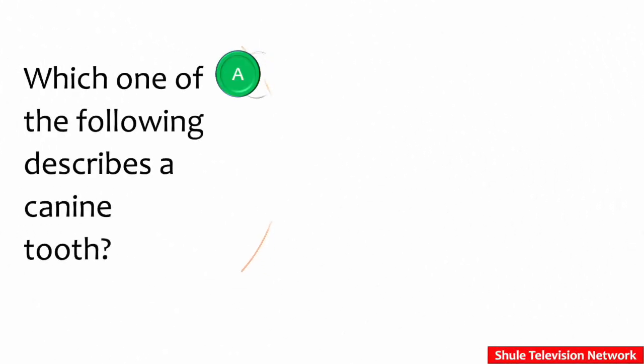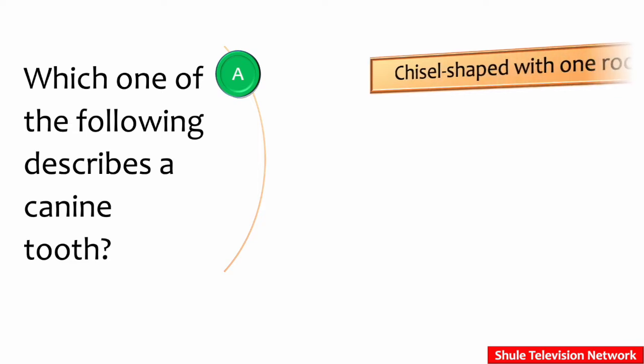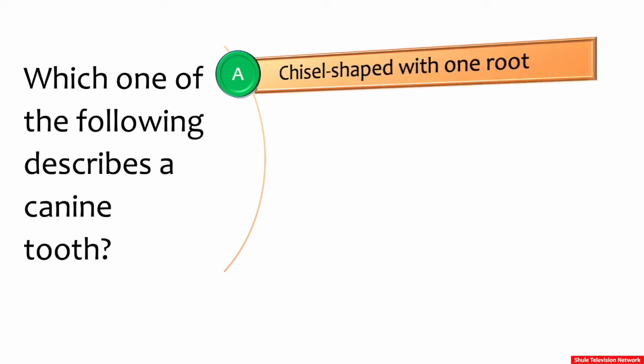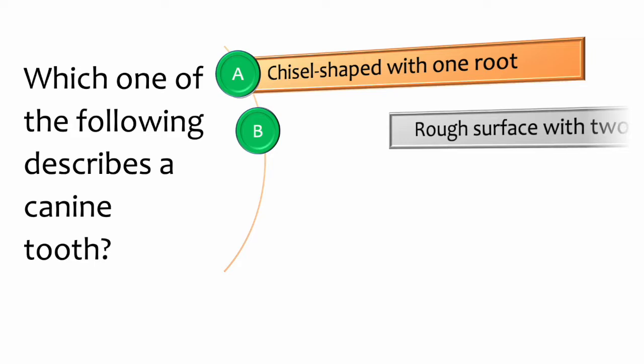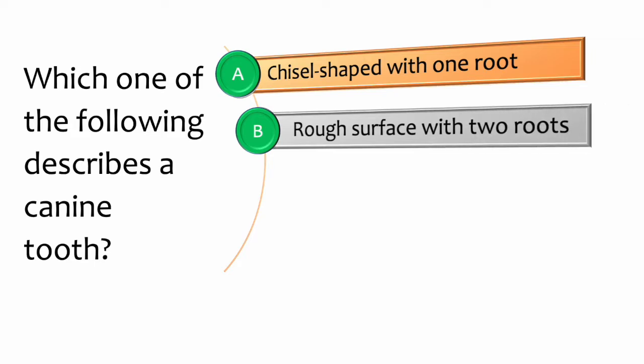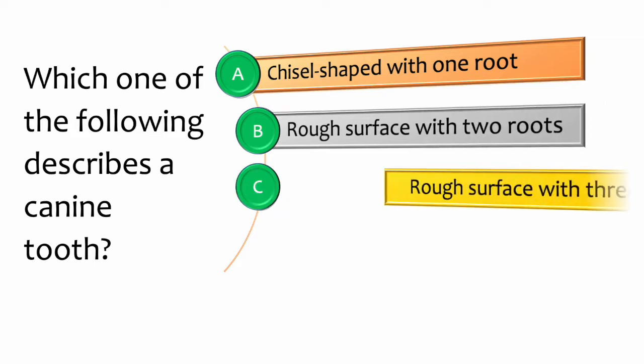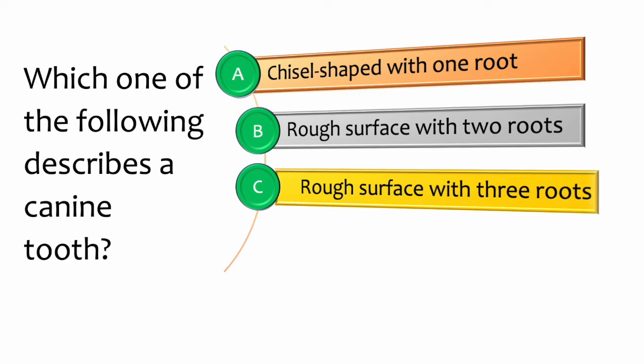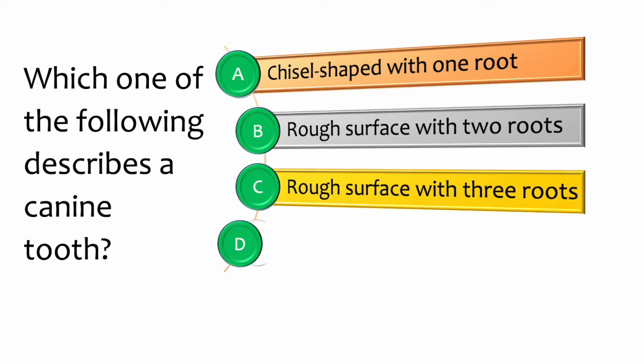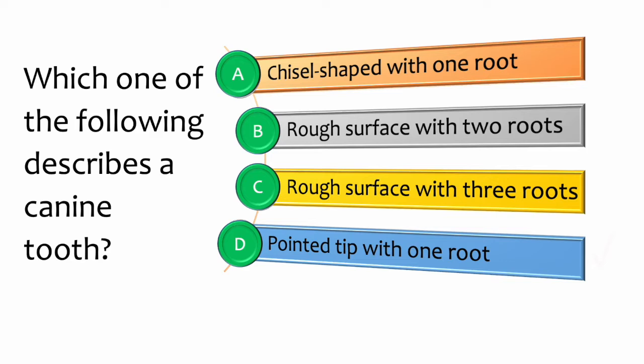Which one of the following describes a canine tooth? A: chisel shaped with one root. B: rough surface with two roots. C: rough surface with three roots. D: pointed tip with one root.